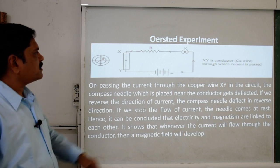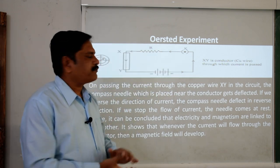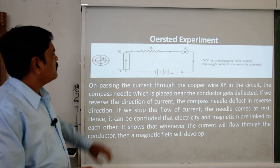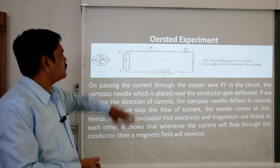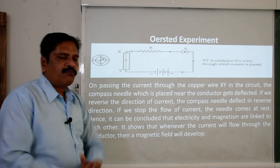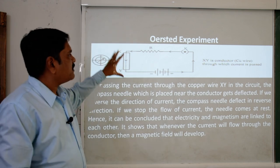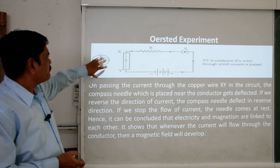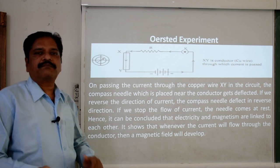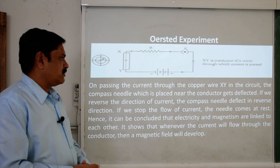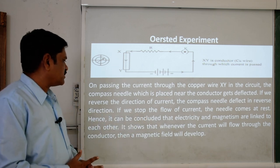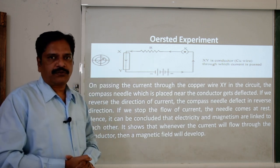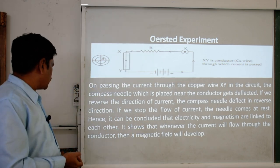Now do the next thing: switch off the circuit and change the terminal of the circuit. You will observe that the direction of electric current also changes — instead of flowing from X to Y, it will now move from Y to X. When the direction of electric current changes, the compass will also change the direction of the magnetic field. So we can conclude: whenever current flows through a conductor, a magnetic field will develop and it depends on the direction of the electric current. This is the basic fact concluded from Oersted's experiment.